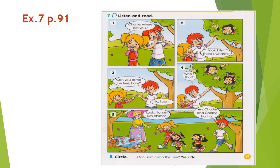Now open your books, page 91, exercise number 7. Listen and read. Charlie, where are you? Look Lily, there is Charlie. Can you climb the tree, Liam? No I can't. Who is that? Look, Nanny, two chimps! Yes, Charlie and Cherry.